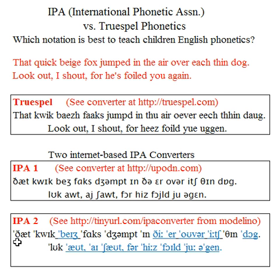In True Spell, you don't need to show stress on the first syllable, but you do need to show stress on the second syllable, which is done by doubling a consonant in front of the second syllable.